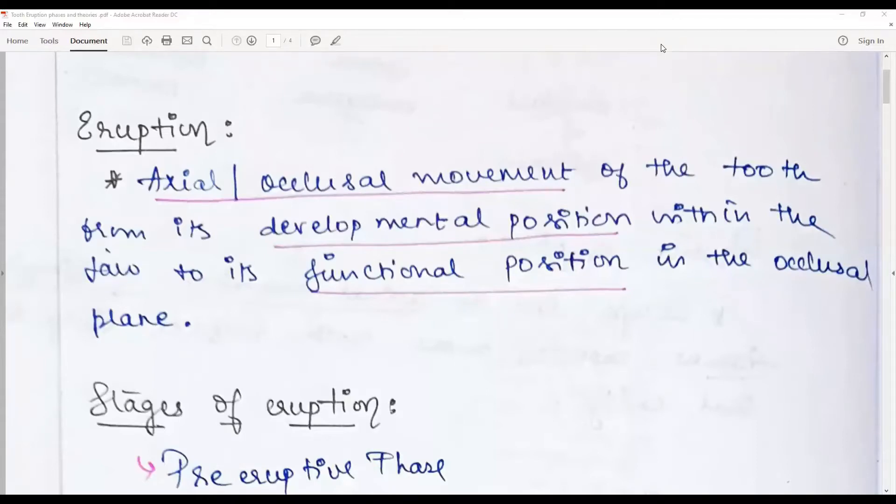Hello everybody, welcome again to another session of one question a day. The question that we are going to discuss today is eruption and tooth eruption phases. Tooth eruption, as you know, is the axial or occlusal movement of the tooth from its development position within the jaw to its functional position in the occlusal plane.